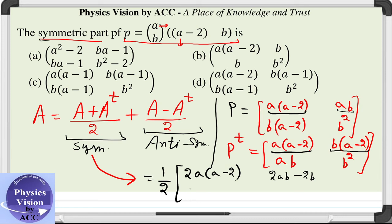The next term is the same as the earlier one, 2AB minus 2B. The last term is 2B squared. Now, canceling out 2 from all elements with the given 1 by 2 outside the matrix, we get option D as the correct answer: first term is A(a-2), these two terms are B(a-1), and this is B squared.